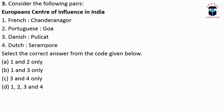The third question gives pairs of European powers and their centers of influence in India to check whether they are correctly matched. First: French matched with Chandernagore. Second: Portuguese matched with Goa. Third: Danish matched with Calicut. Fourth: Dutch matched with Serampore. Only first and second are correct. The French had influence in Chandernagore and regions like Pondicherry, Mahe, and Karikal. The Portuguese had influence in Goa as a great naval power. Third and fourth are incorrect — the Danes controlled Serampore, not the Dutch. So the correct option is one and two only, which is option A.